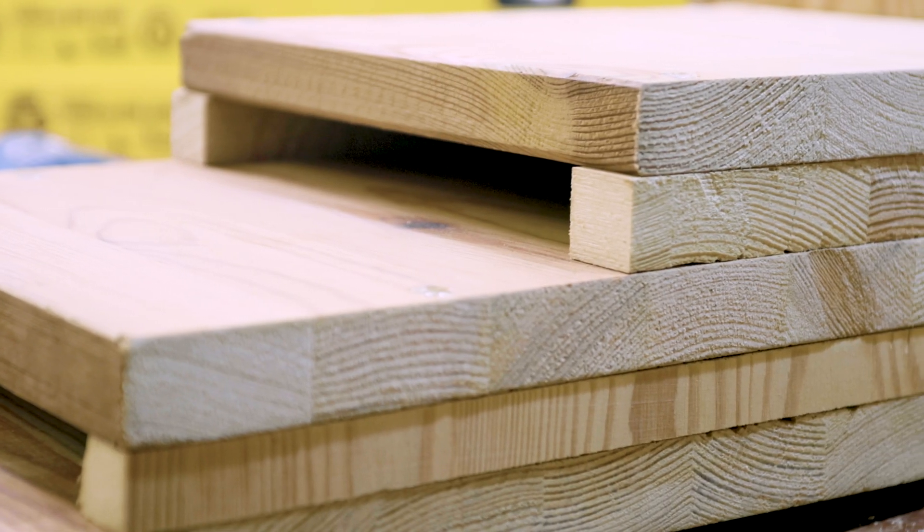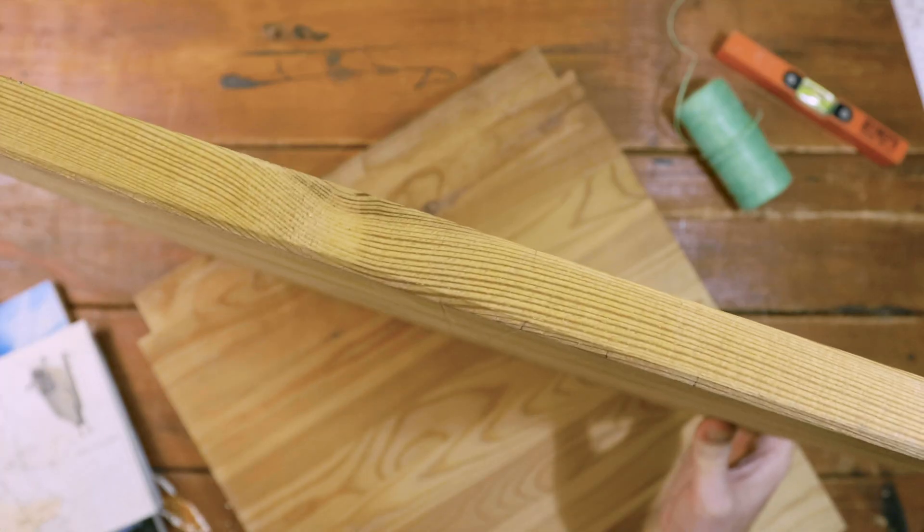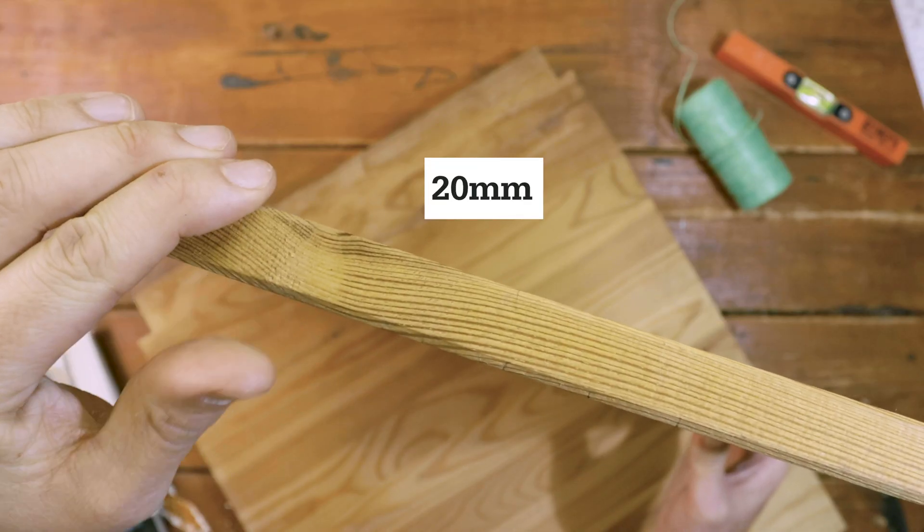It can be bigger or smaller to accommodate bats in your part of the world. We're picking timber around about 20 millimetres thick.